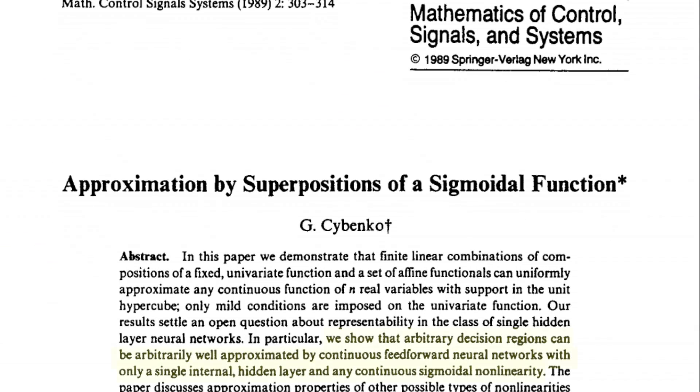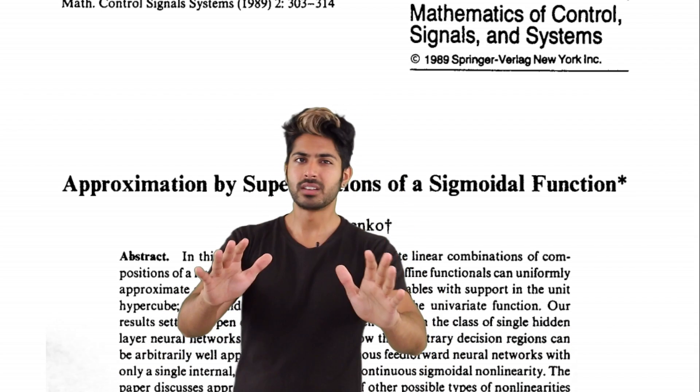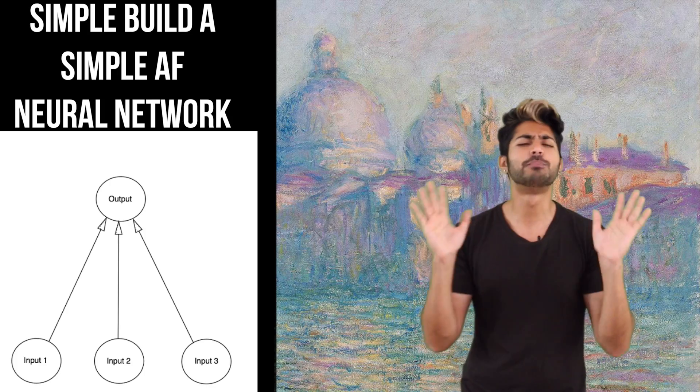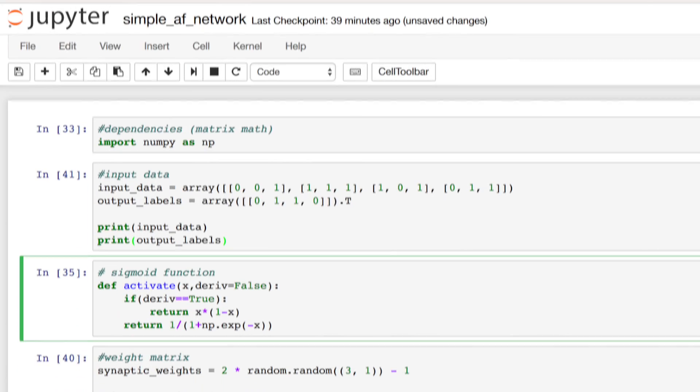This was proven in 1989. We show that arbitrary decision regions can be arbitrarily well approximated by continuous feed forward neural networks with only a single internal hidden layer and any continuous sigmoidal non-linearity. Wait what? Are you trying to throw hands here? I'm okay if you want to. Look, let's just build a simple AF neural network.